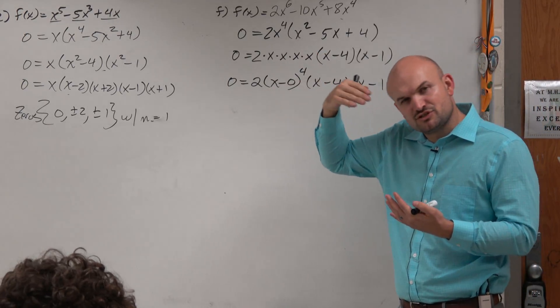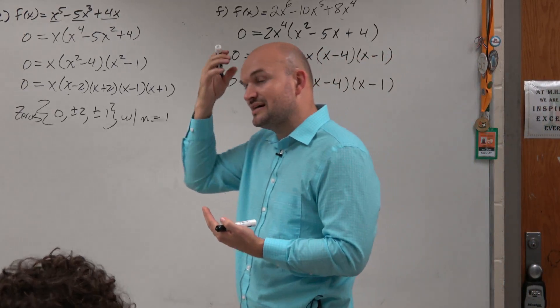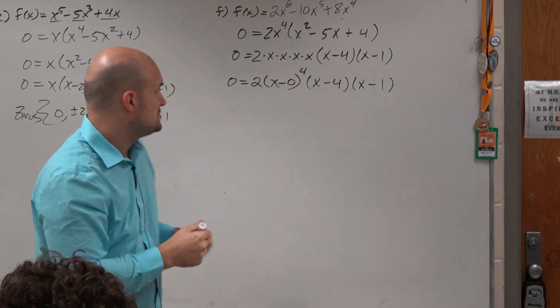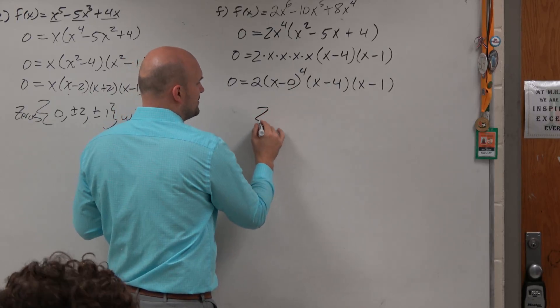You actually don't need to write either one of those. I'm just trying to show you ways for us to identify, or at least for us to understand that the multiplicity there is 4. So when I go ahead and write my zeros, I'd use the zero product property.